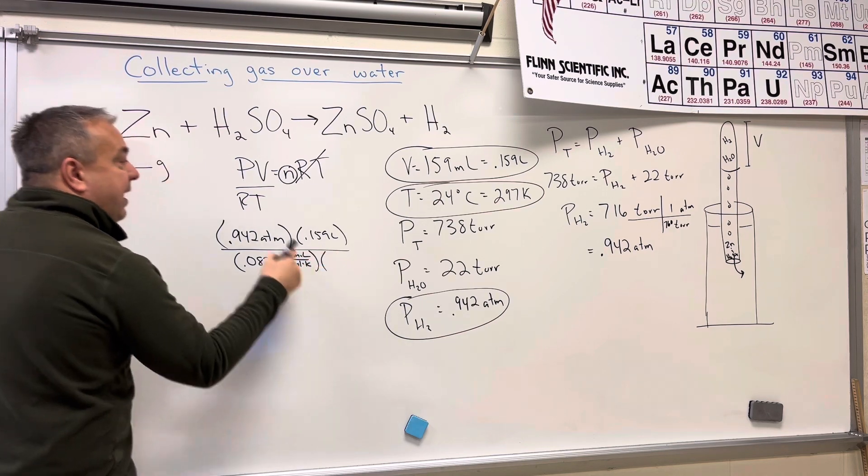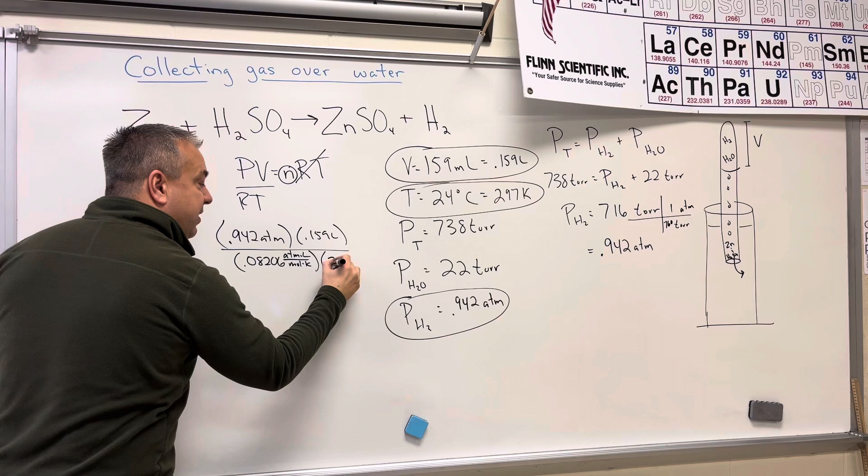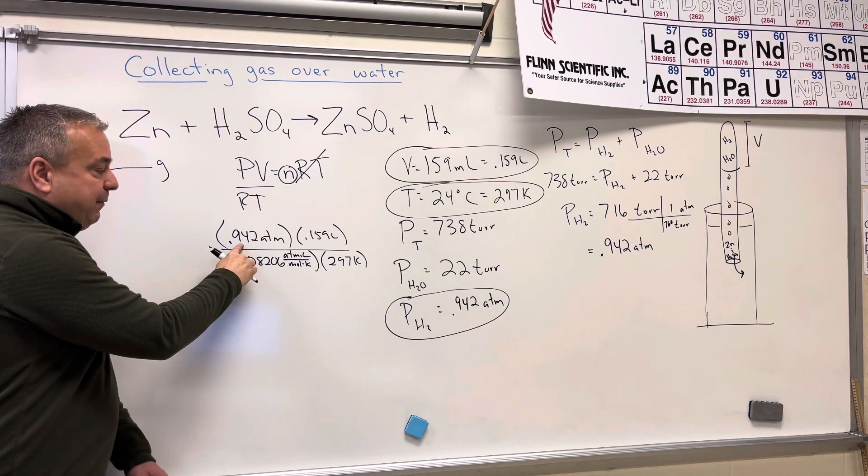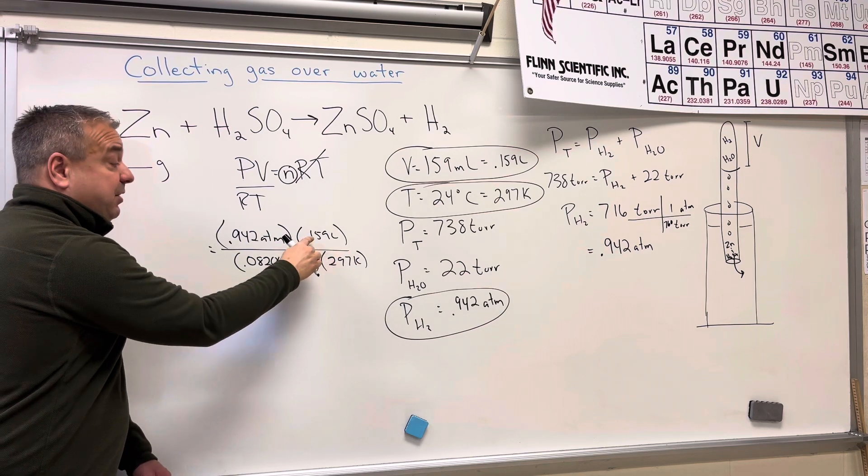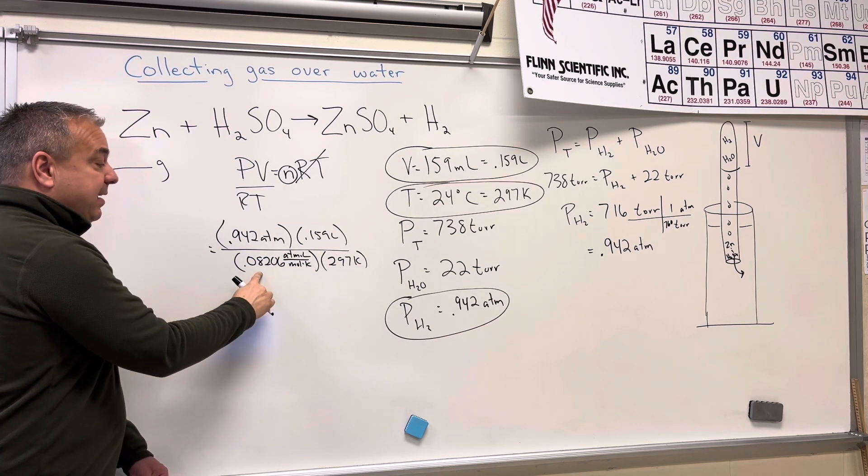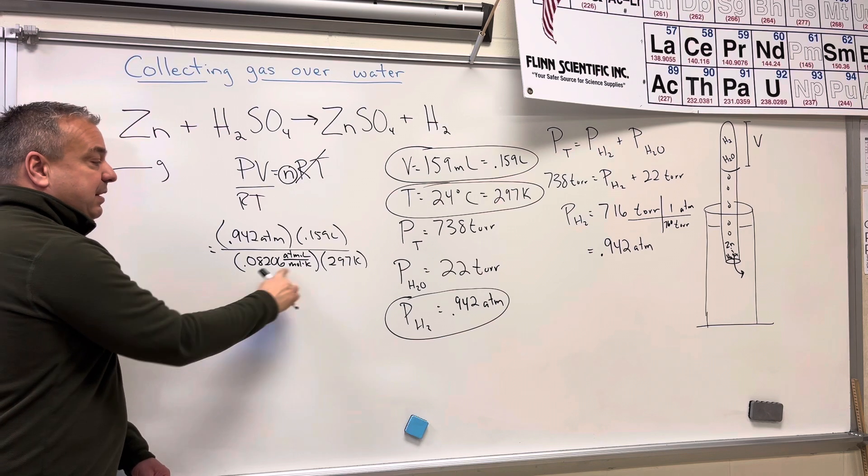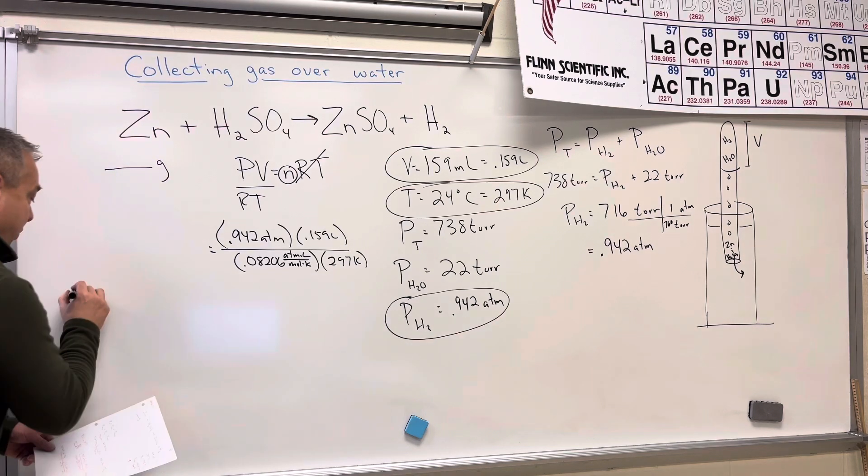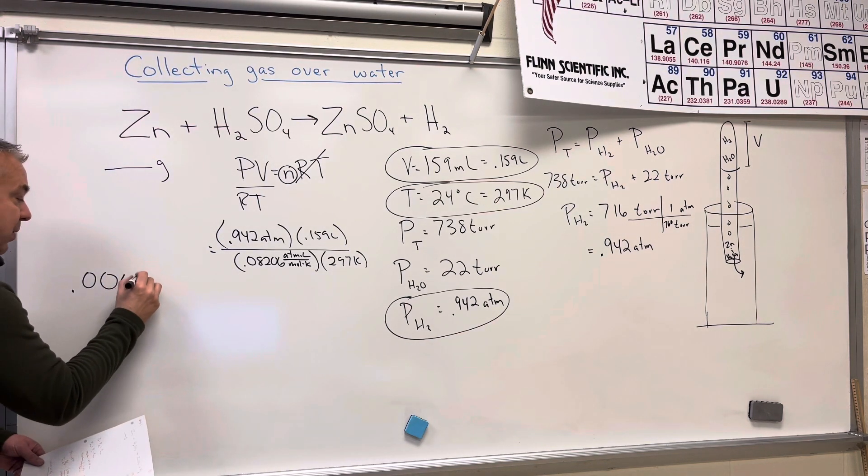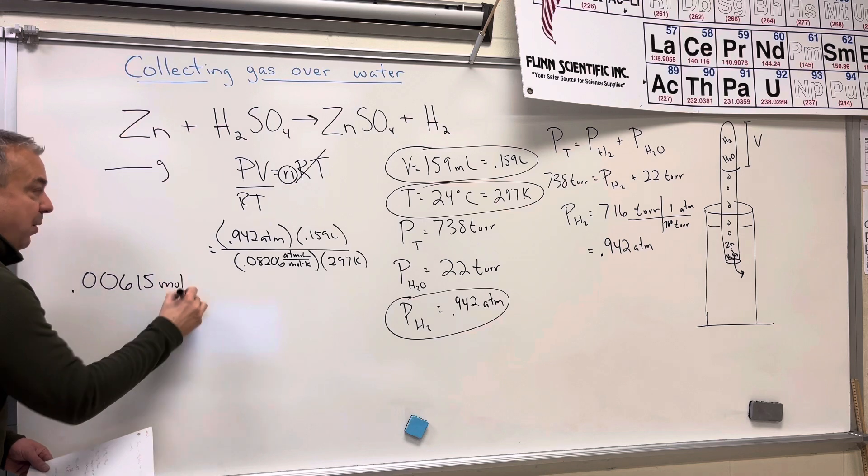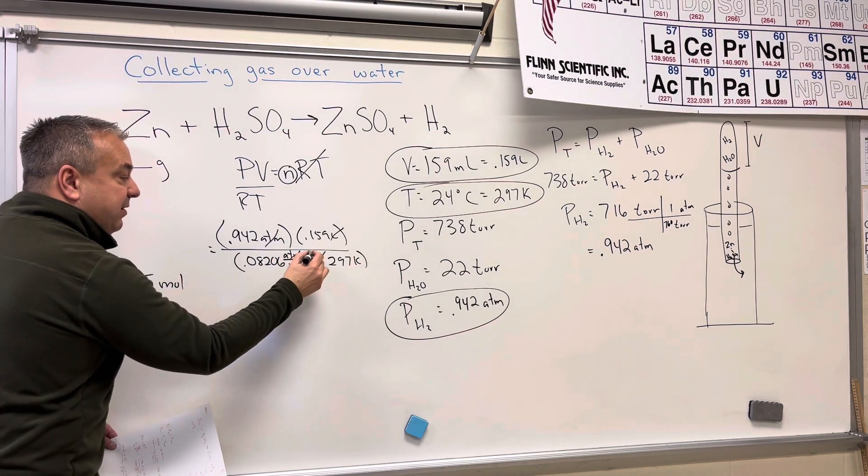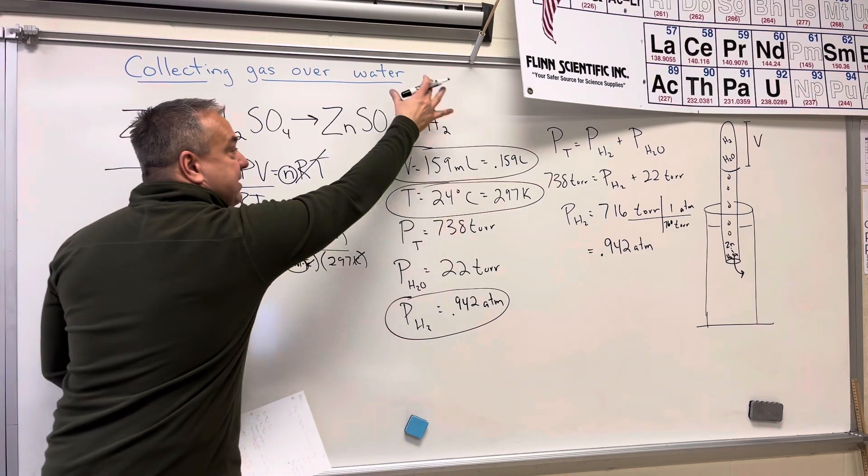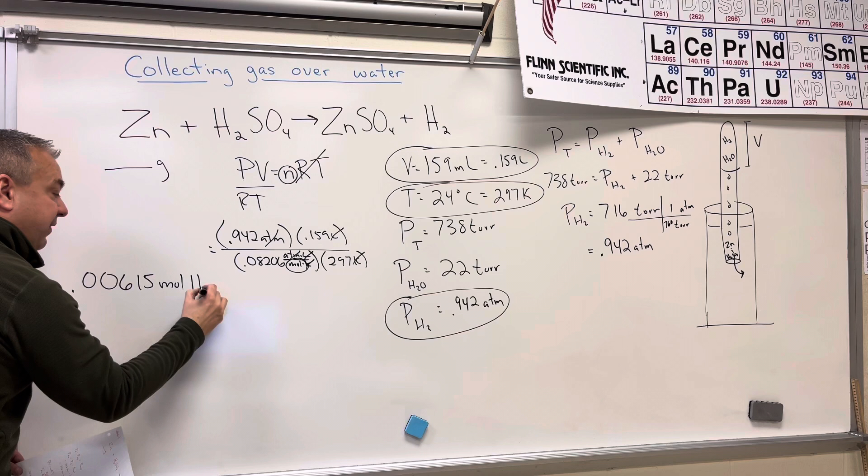And the temperature is 297 Kelvin. So in my calculator, 0.942 times 0.159 divided by 0.08206 divided by 297 gives you a value of 0.00615. And remember, that's going to be moles because the ATMs cancel out, the liters cancel out, the Kelvins cancel out, and I'm left with moles. And since all of this is of hydrogen, this is going to be moles of hydrogen.